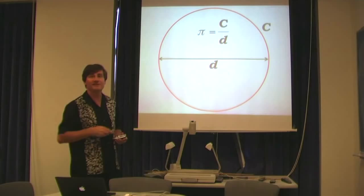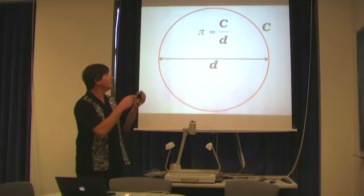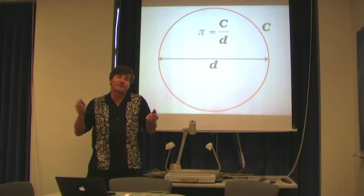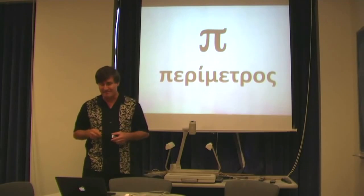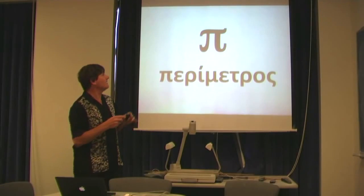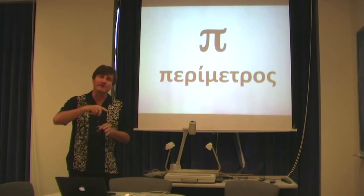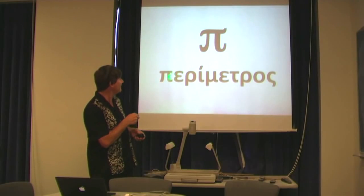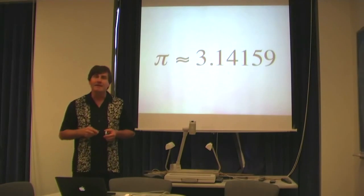So pi is the circumference divided by the diameter. And this number, pi, is the same for all circles. No matter which circle you take, circumference divided by diameter is equal to pi. Pi comes from the Greek word perimetros, which means perimeter, or in the case of a circle, the circumference of a circle. And the first letter of perimetros is pi, the Greek letter pi.